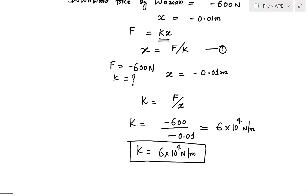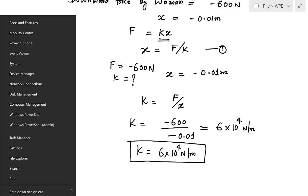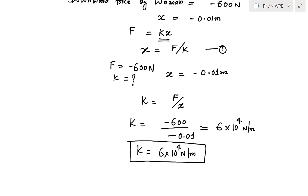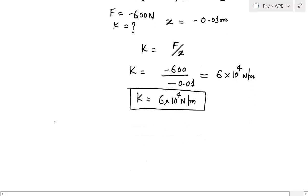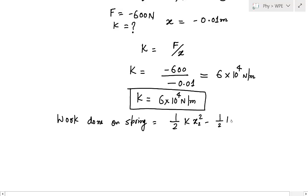At equilibrium, the force applied by the bowman equals the force applied by the spring. Now let us come to the second part: we have to calculate the work done on the spring. Work done on a spring is nothing but the change in potential energy, that is half k x2 squared minus half k x1 squared.